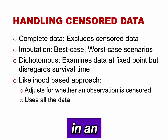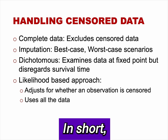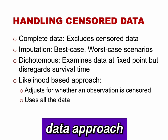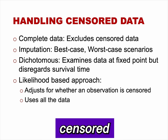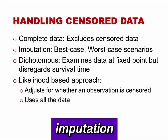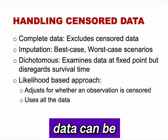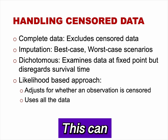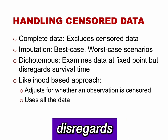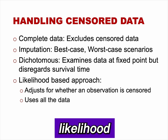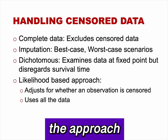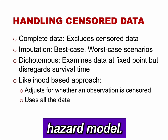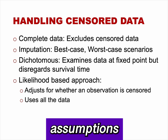How to handle censored data in an analysis is complicated and beyond the scope of this talk. In short, there are four methods. The complete data approach excludes censored data, which decreases sample size and may miss important information. The imputation approach inputs missing data — for example, in a best-case or worst-case scenario — providing extremes but not actual results. The dichotomous approach examines data at a fixed point and disregards survival time. The recommended approach is the likelihood-based approach, which accounts for whether an observation is censored, uses all the data, and is the approach used by the log-rank test and the Cox proportional hazard model. Each method requires some assumptions about censored data.